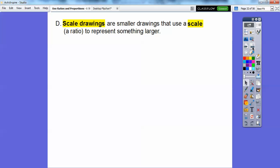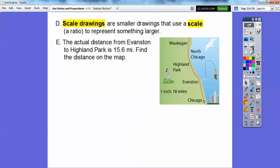All right, scale drawings, you guys, are similar drawings that use a scale, which is a ratio, you guys, to represent something larger, okay? So here's an example right here. So this is a scale drawing of the actual distance right here. So the actual distance from Evanston to Highland Park right here is 15.6 miles, okay?